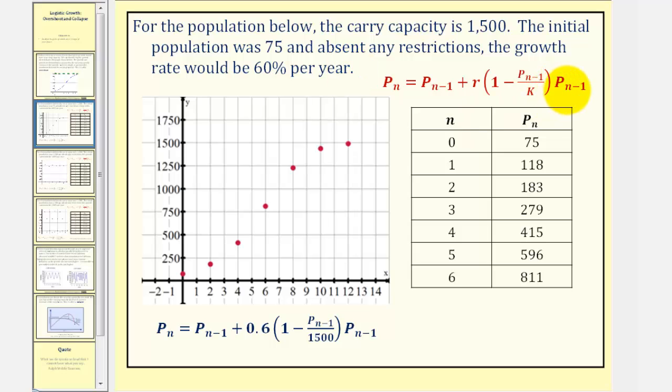So using our recursive logistic growth equation here from our previous lesson, we should be able to perform a substitution for r and k, and then find the population levels given in the table.